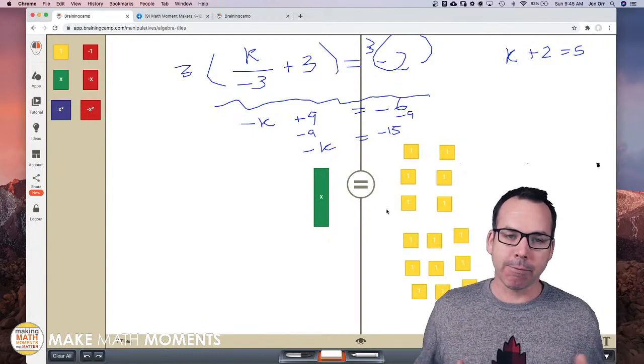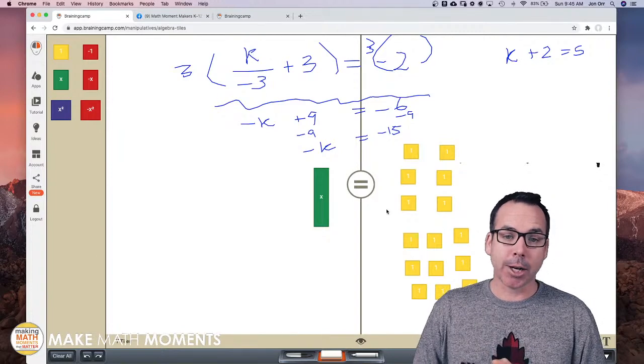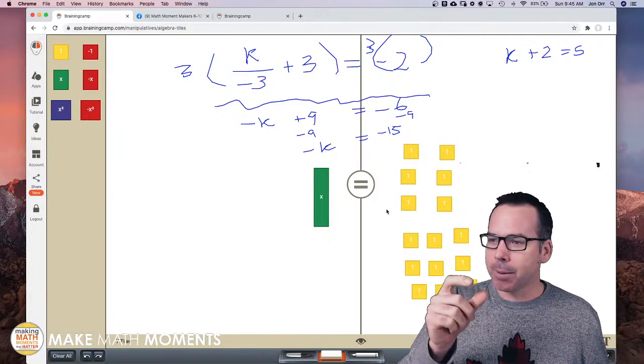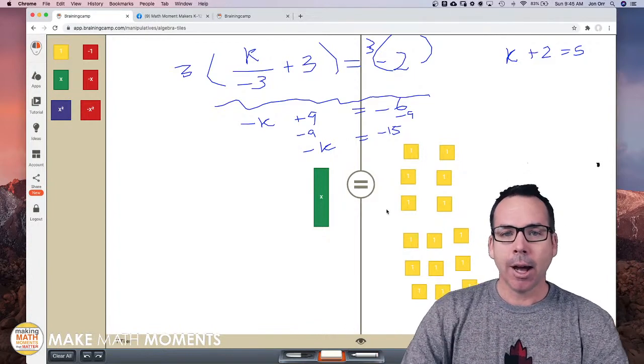So for an equation that involved a fraction, don't think of it as how do I model a third. Partition your fraction and then model the equation after that.